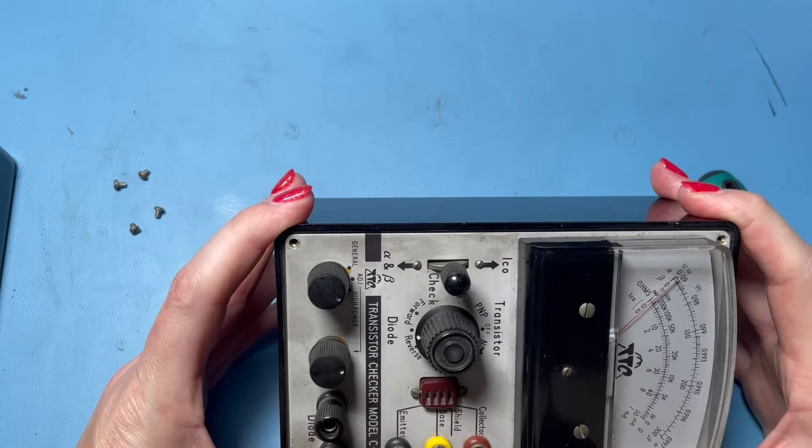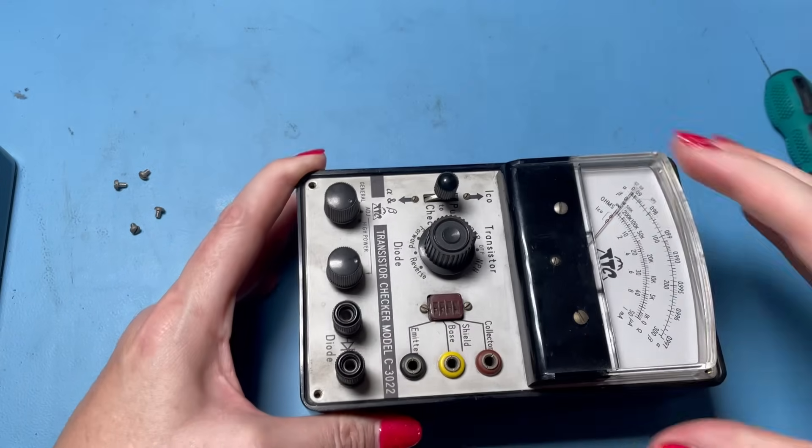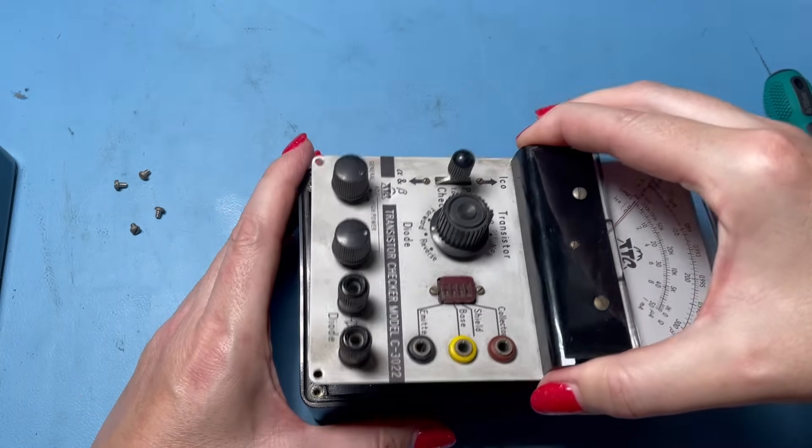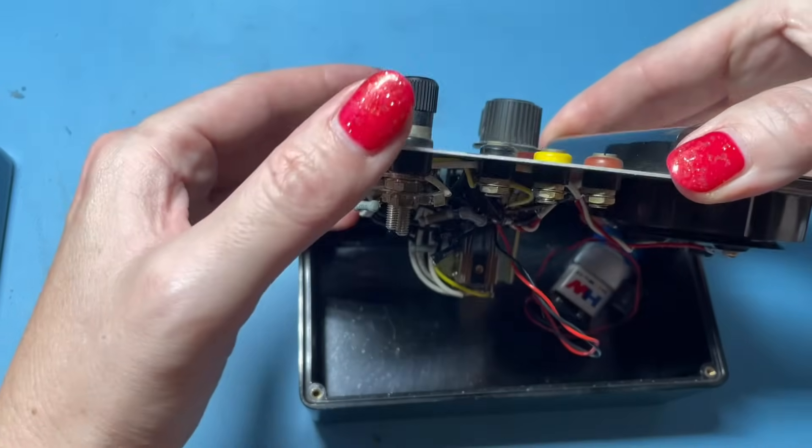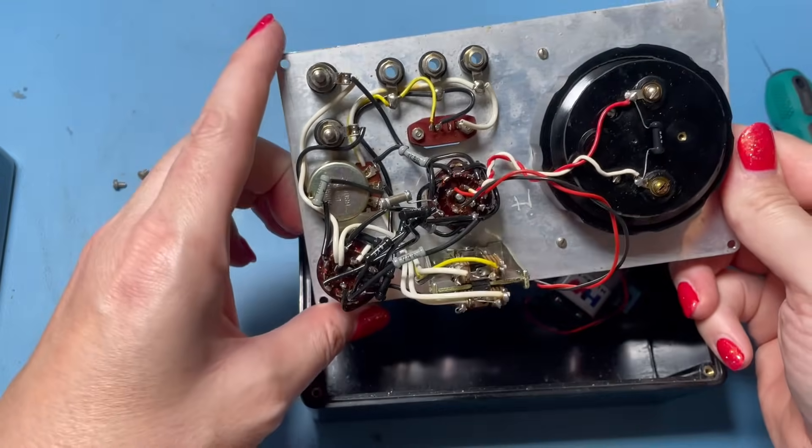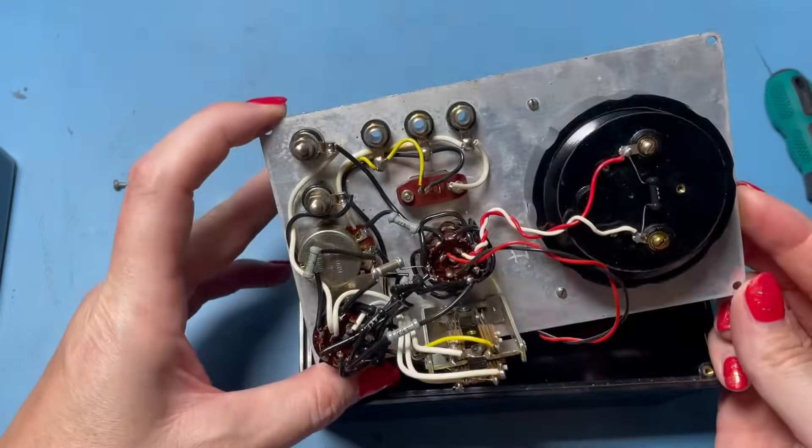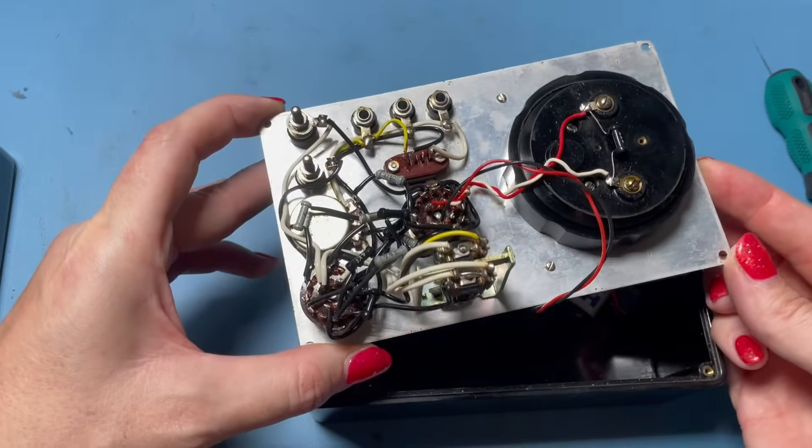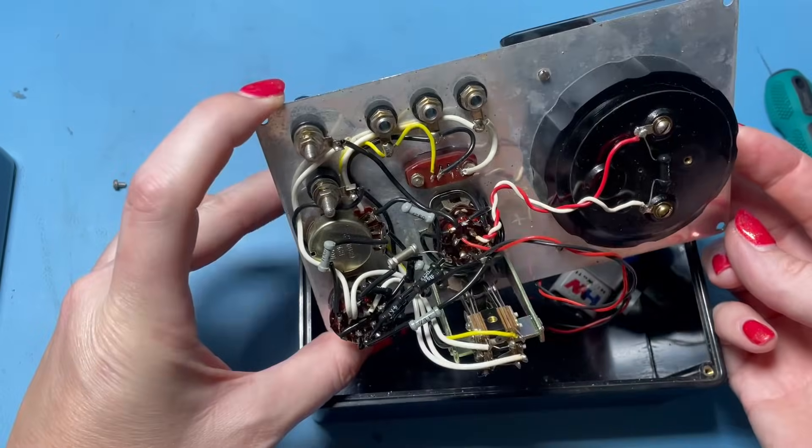Looks like I'm guessing just four screws to get this open. Oh, it's still got a battery in it. Would you believe? Look at this. So everything's on the panel itself. No PCB or anything, of course.